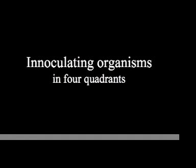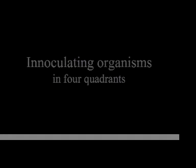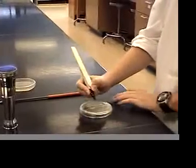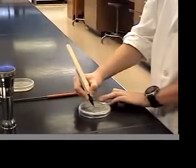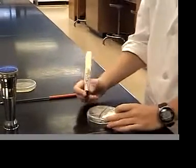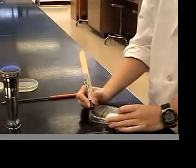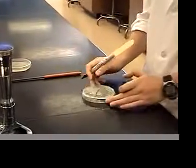In order to inoculate four organisms on the same plate, we will split it into four different quadrants. Draw on the bottom of your plate so that there are four equally sized quadrants.